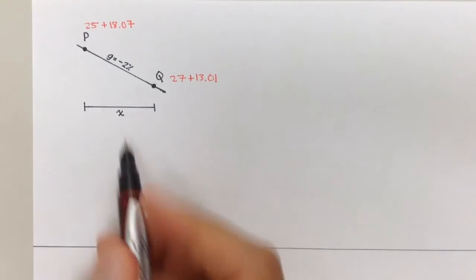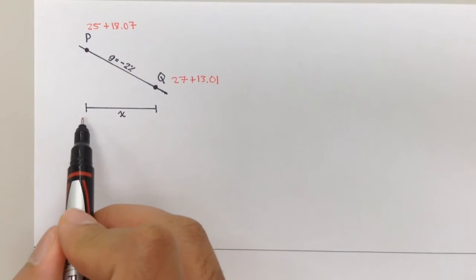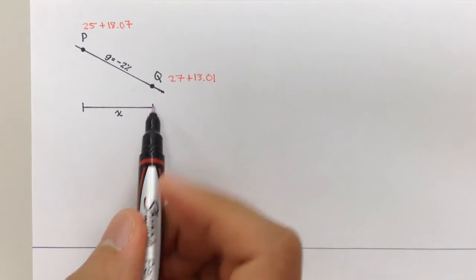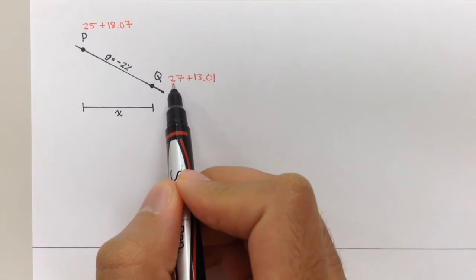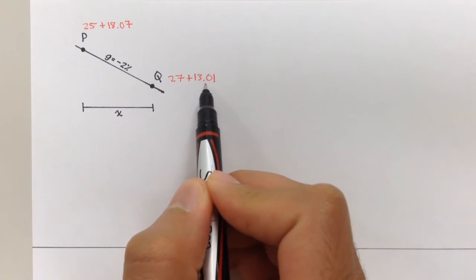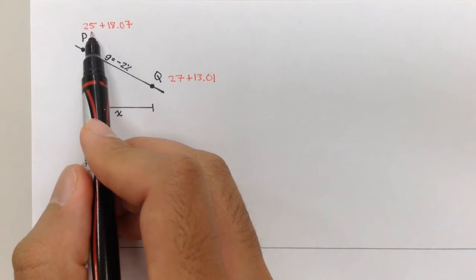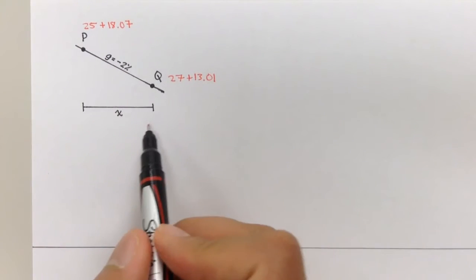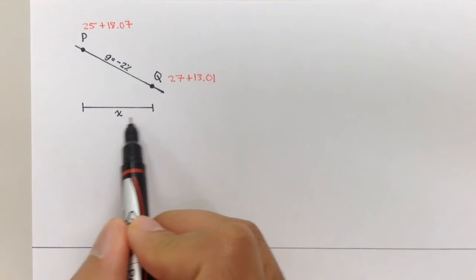All right, so X is the distance, the horizontal distance between these two points. So in order to find this, all I would have to do is subtract 27 plus 13.01 minus 25 plus 18.07. That would give me the distance X.